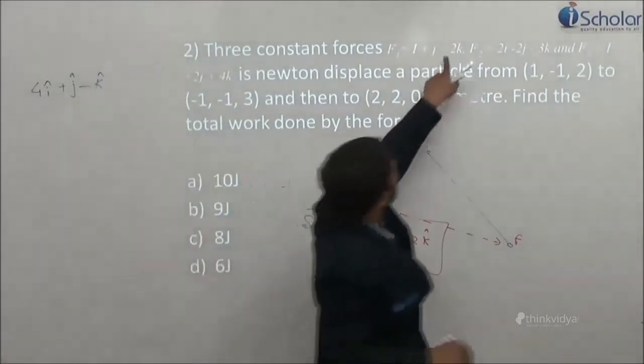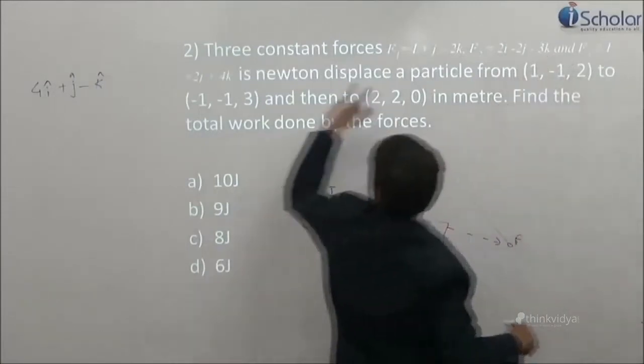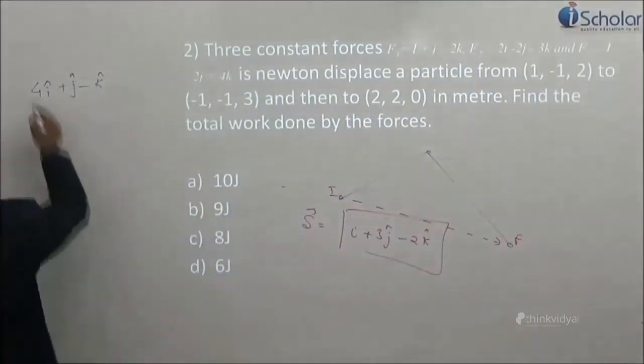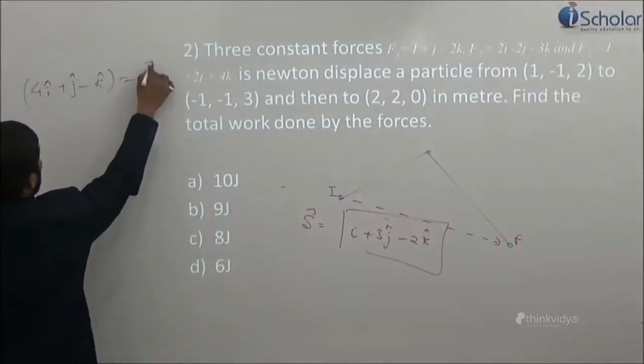j minus 2k minus 2k minus 3k and plus 4k equals minus k. This and this will bring up minus 5k and this is plus 4k, so this is minus k. This equals to force.